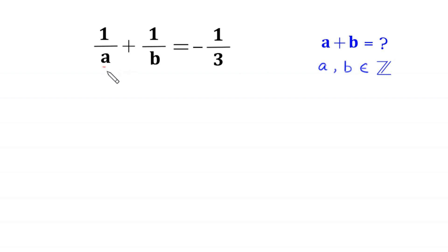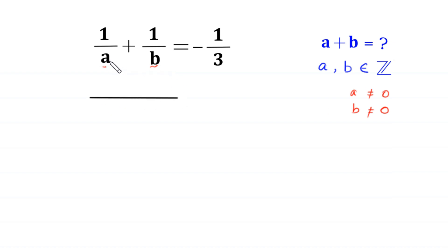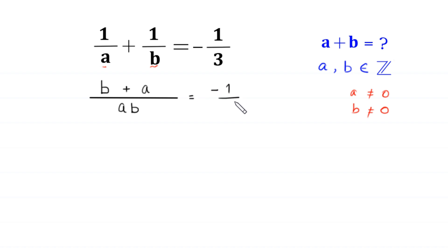Since a is in the denominator, a cannot be equal to 0, and b is in the denominator, b cannot be equal to 0. We take the LCM of these two denominators a and b. The LCM of a and b is a times b. When we divide ab by a, we get b; b times 1 is b. Plus ab divided by b is a; a times 1 is a. This is equal to negative 1 over 3.